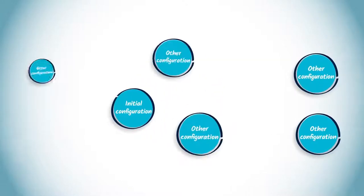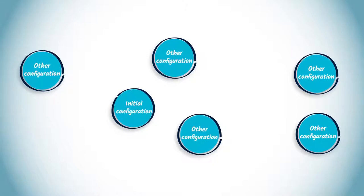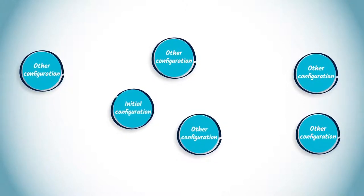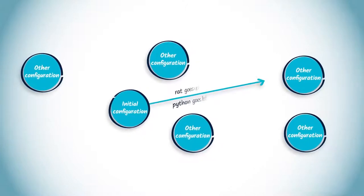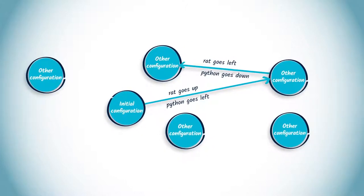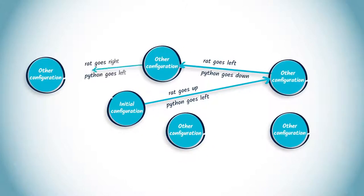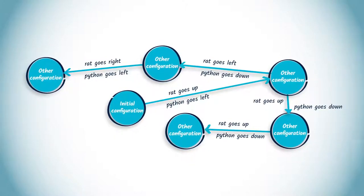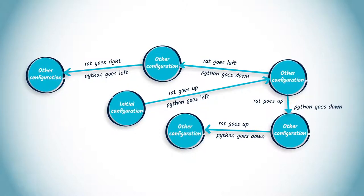There is an initial vertex that corresponds to the initial configuration, where both the rat and the python have score zero and are at their starting positions, and all pieces of cheese are spread throughout the maze. There are also vertices corresponding to all possible configurations that might occur during a game. Vertices are connected by edges labeled according to two variables: the first corresponds to the decision made by the rat, and the second to the decision made by the python.